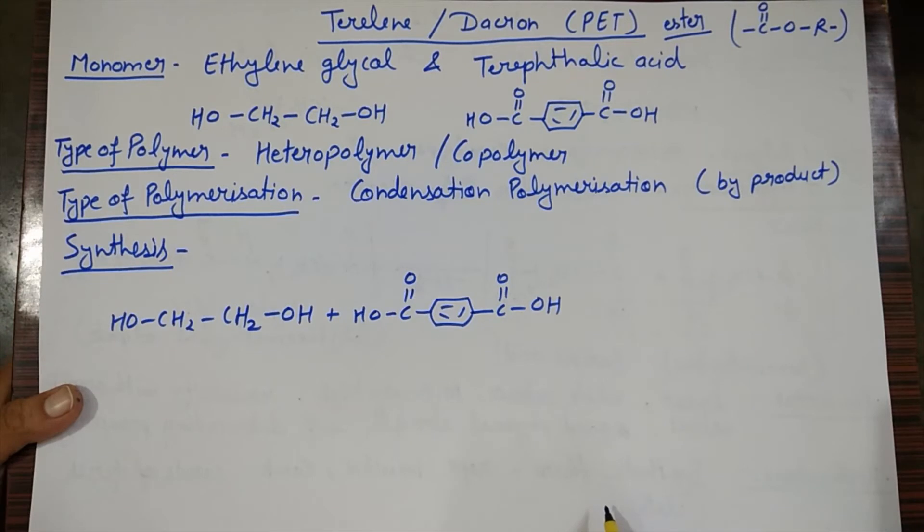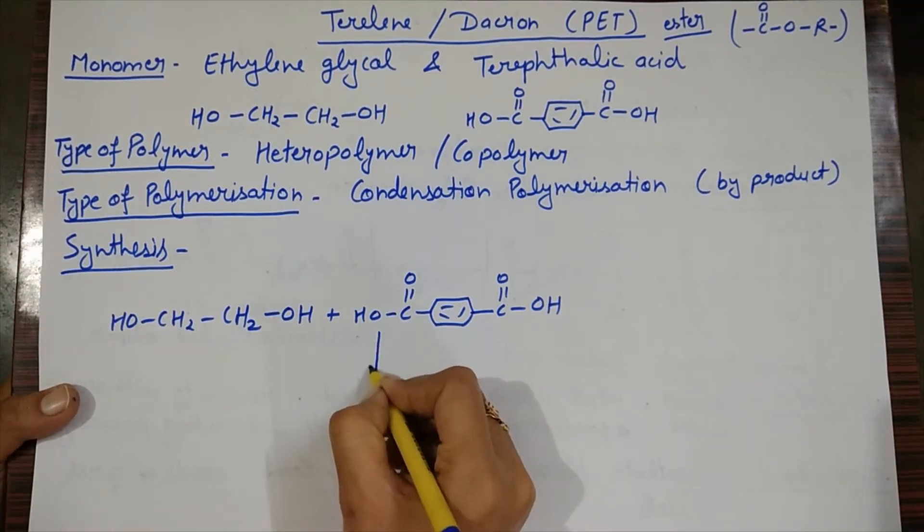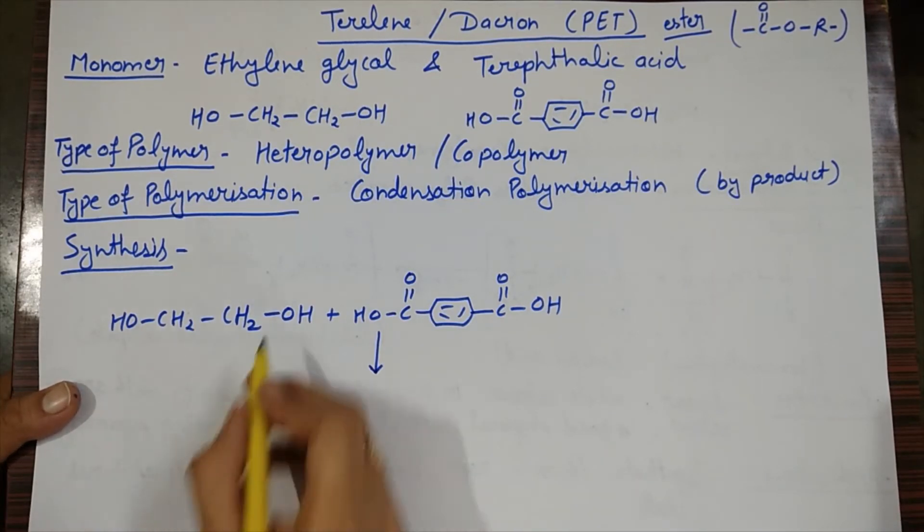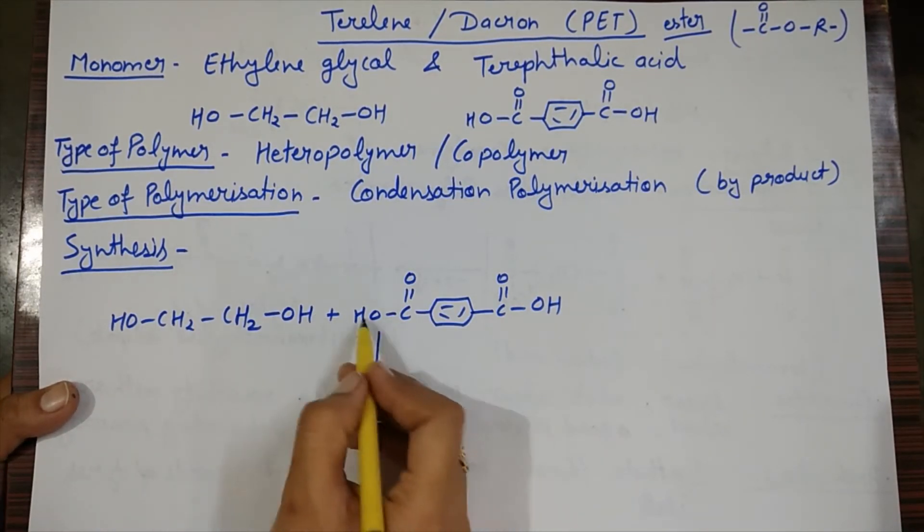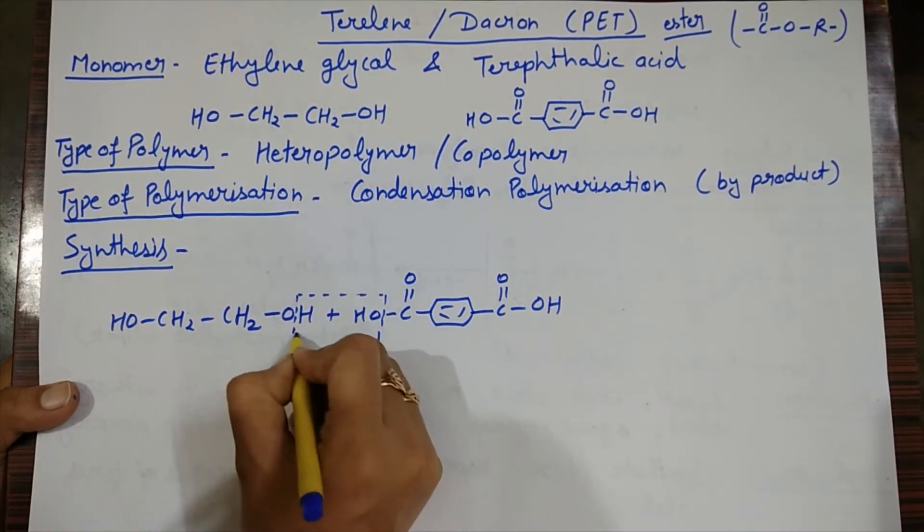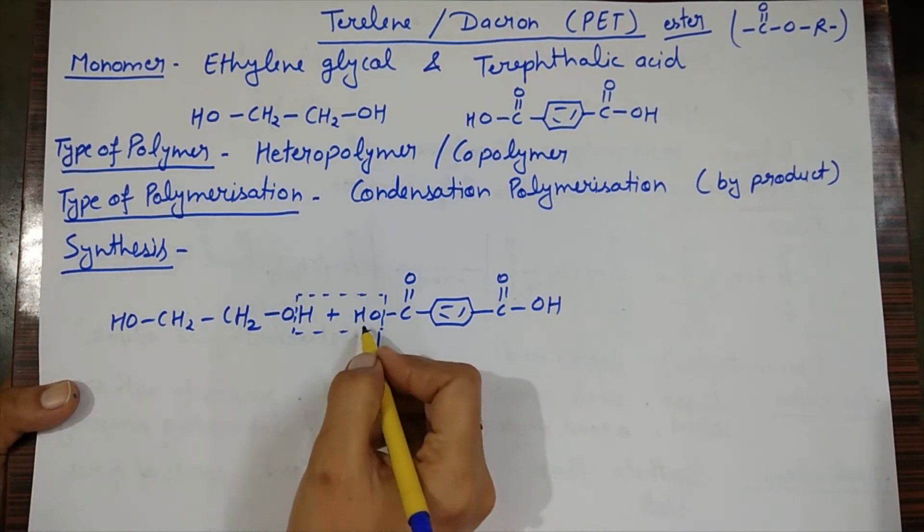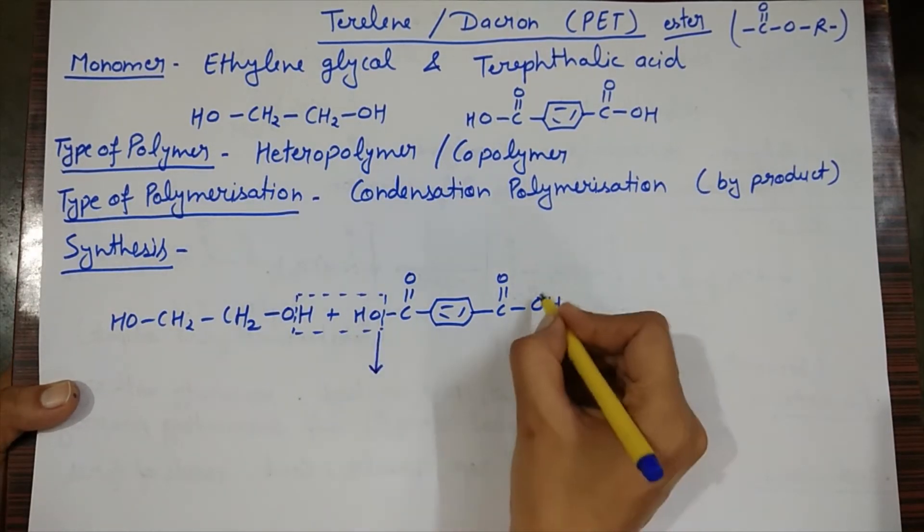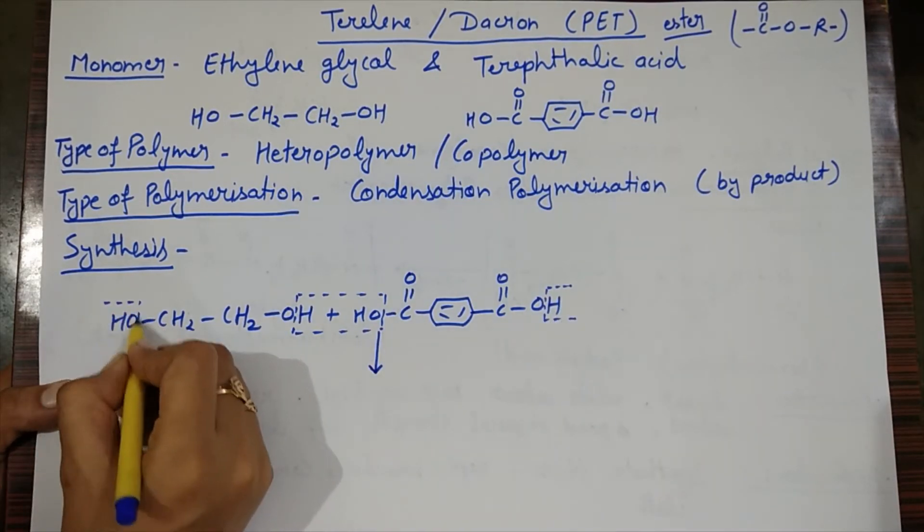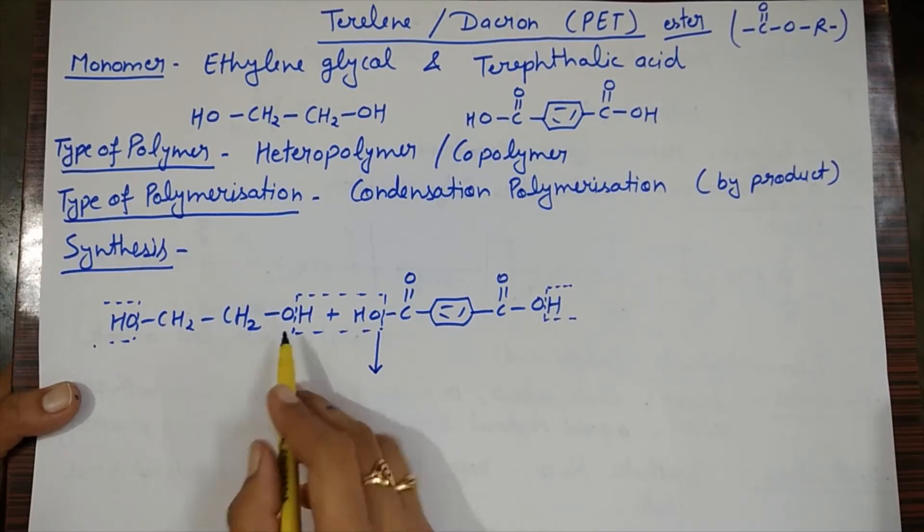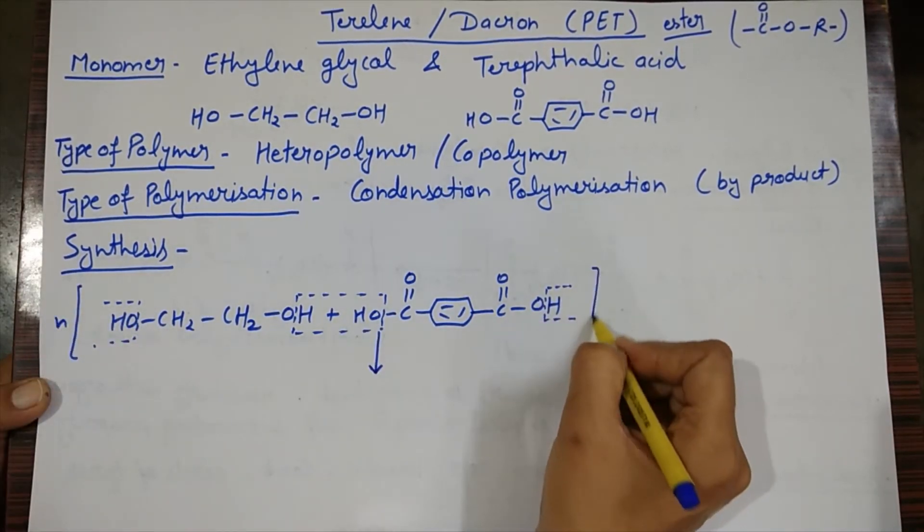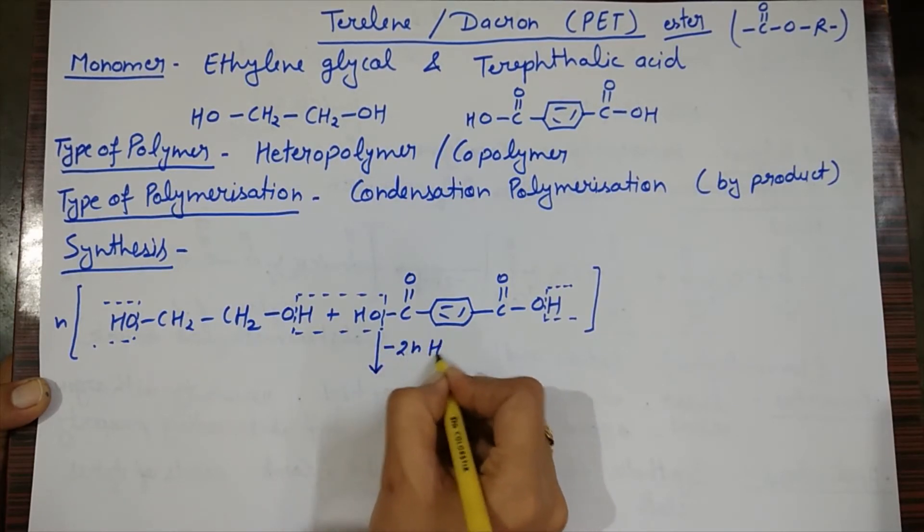When these two monomer units form a bond, after the bond formation, a water molecule will be eliminated. How will it be eliminated? One unit of H and the other unit of OH. That means one side loses H and the other side loses OH. If we have N number of monomer units, then 2N H2O molecules will be eliminated.